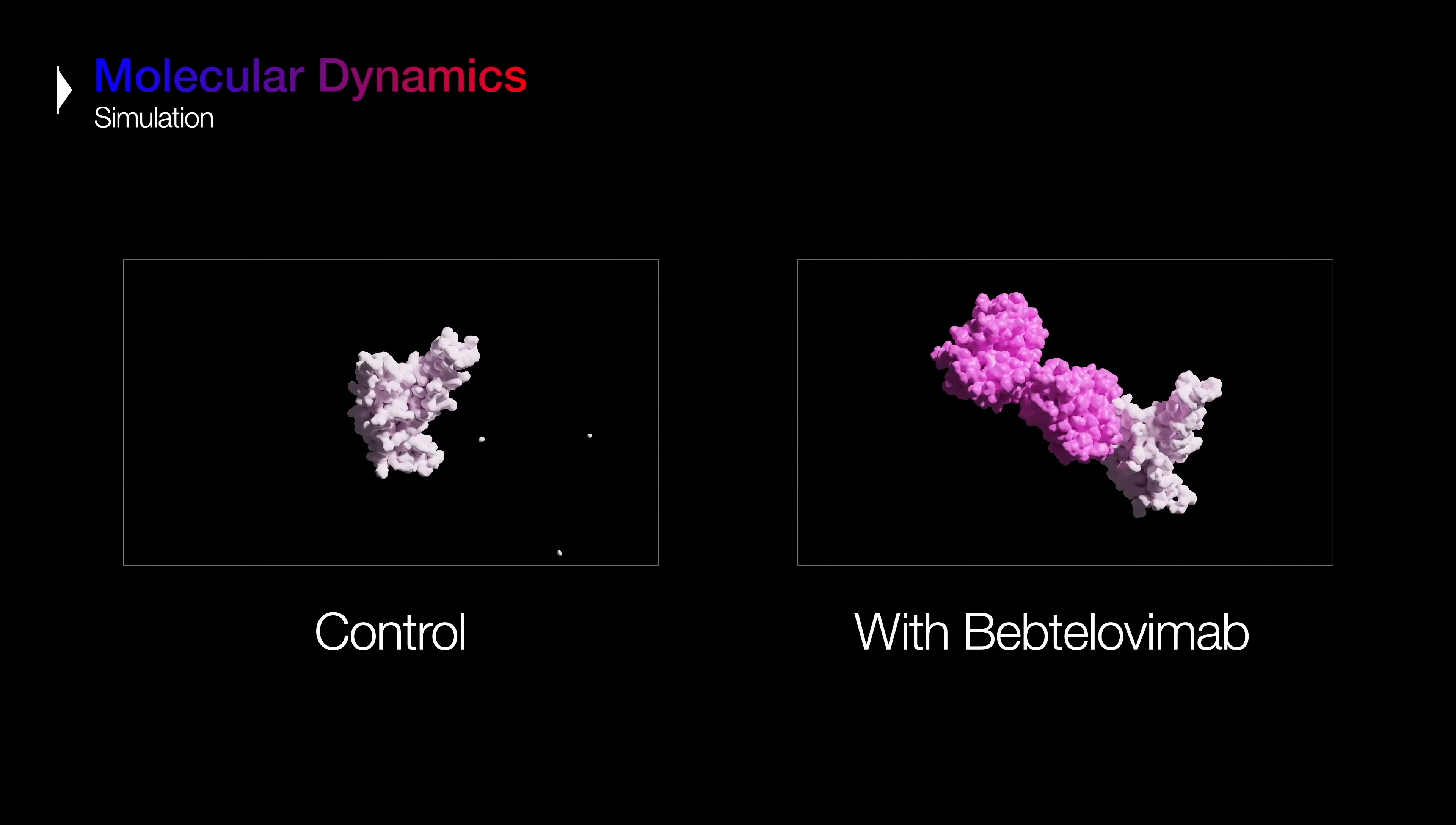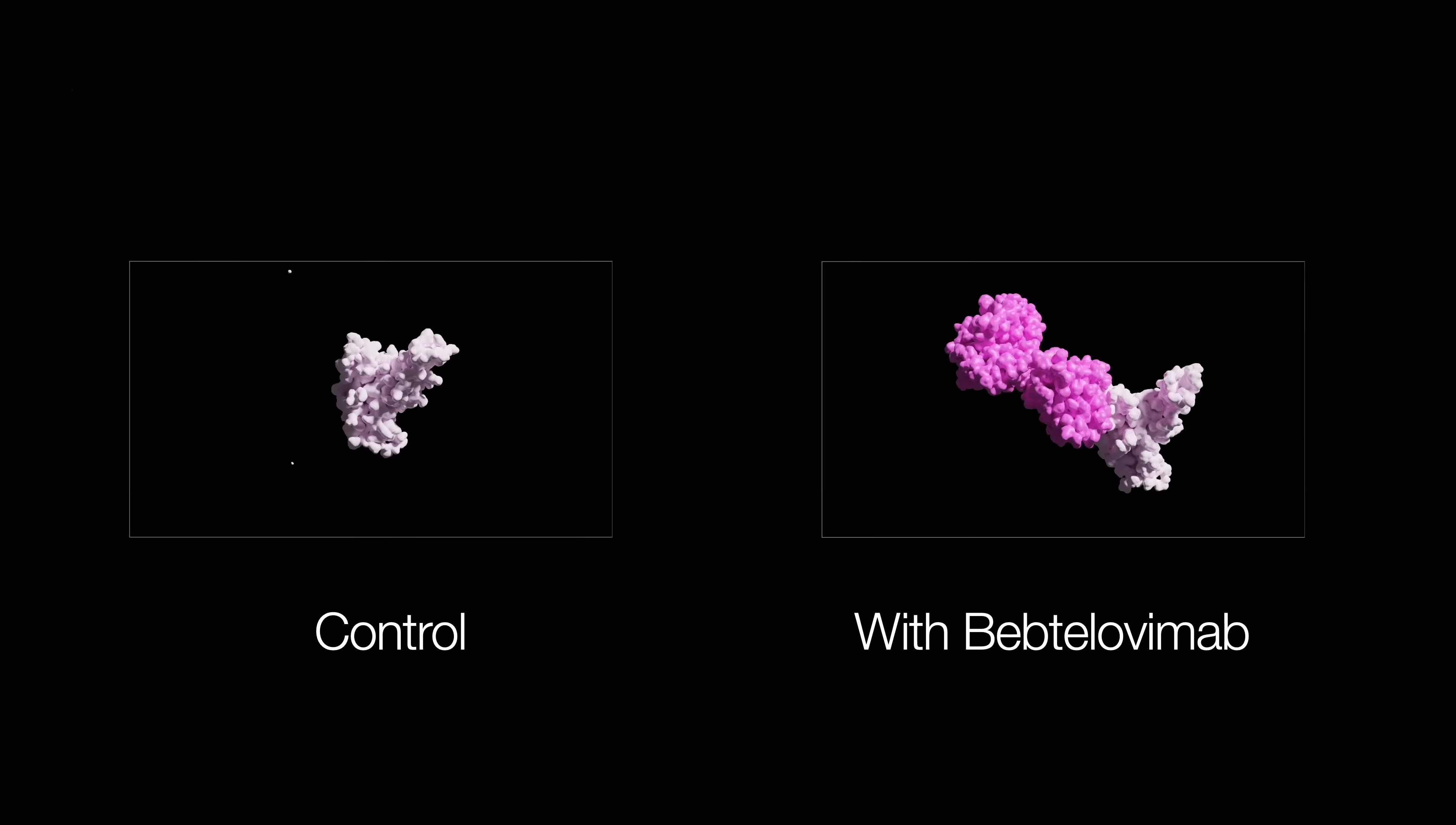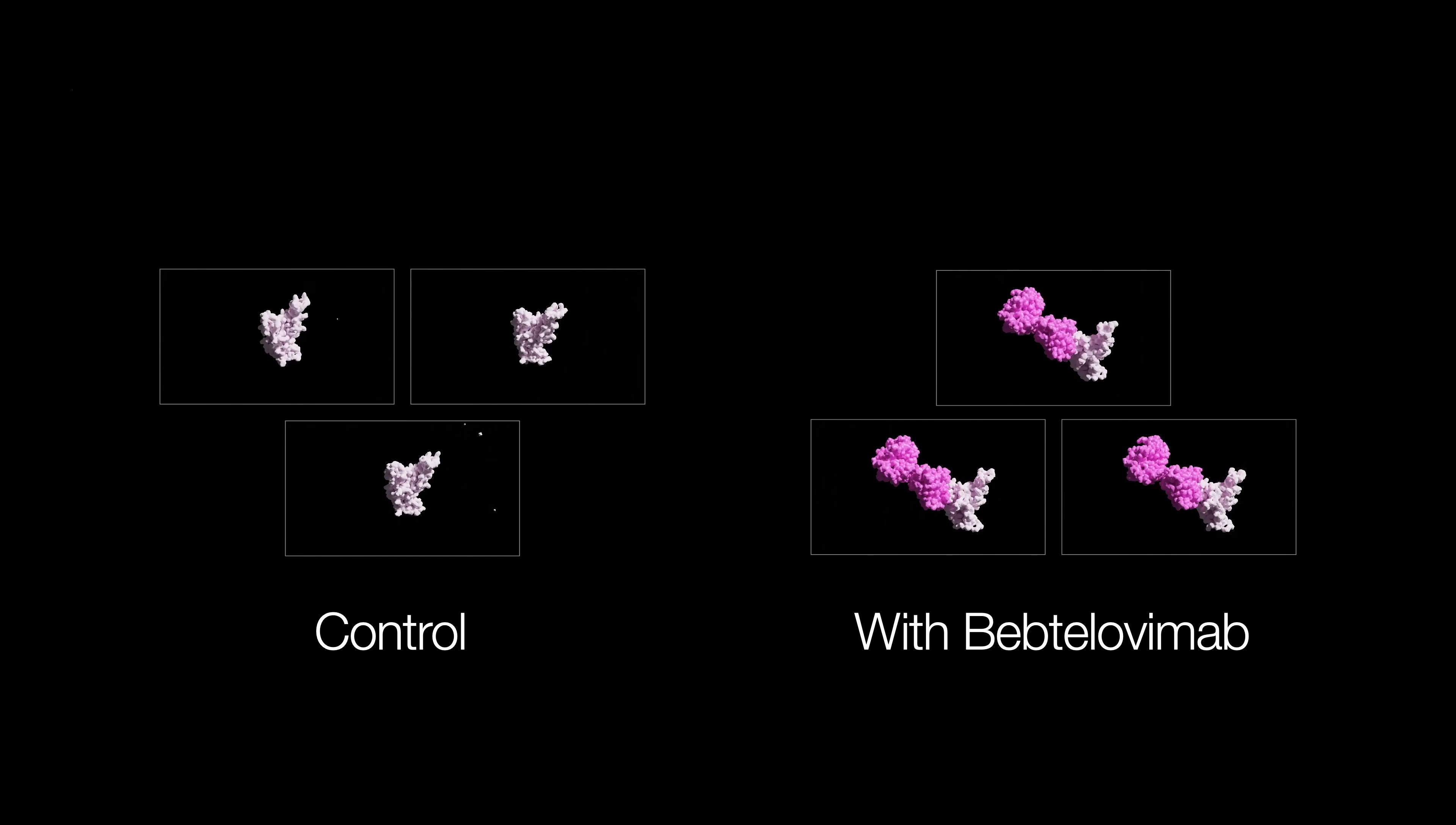So, we'll make two versions of this simulation, one with the drug and one without as the control, repeating each one three times. As your science teacher has probably said in school, three replicates ensure that the results we get in one simulation aren't just one-off flukes.